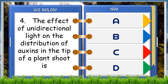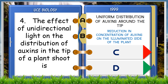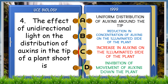The effect of unidirectional light on the distribution of auxins in the tip of a plant shoot is: A. Uniform distribution of auxins around the tip, B. Reduction in concentration of auxins on the illuminated side of the plant, C. Increase in auxins on the illuminated side, D. Inhibition of movement of auxins down the plant. The answer is B, reduction in concentration of auxins on the illuminated side.